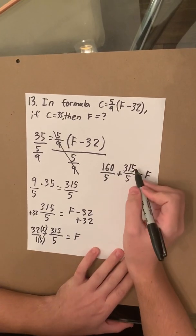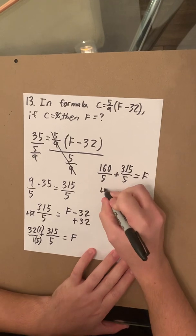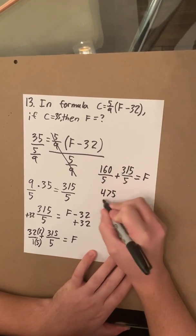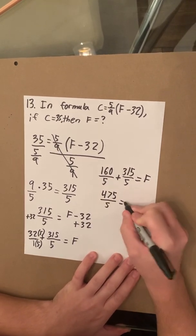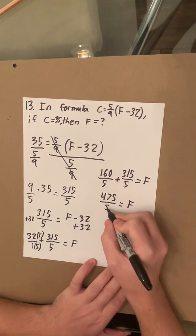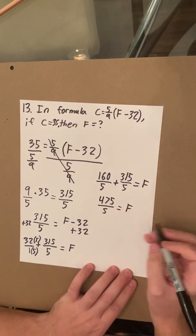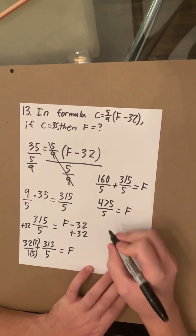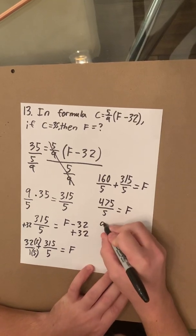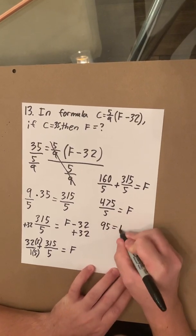Now we add these two together, which equals 475 divided by 5 equals F. And then we divide 5 into 475 because that can be simplified, which equals 95 equals F.